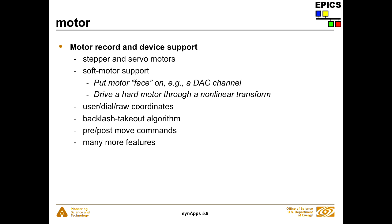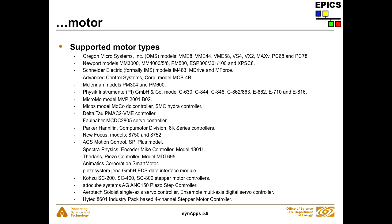The motor module is huge, and Ron is going to talk about it later. It provides support for stepper and servo motors, and there is a soft motor so you can have a soft motor, run it through a non-linear transform, and then talk to a hard motor. The motor record supports user, dial, and raw coordinates, and there's a backlash takeout algorithm. This is also the reason we can't fully test Synapse until it's deployed on APS share — because the various motor controllers are strewn throughout the beamlines, so you can't actually test until you get time on a beamline.